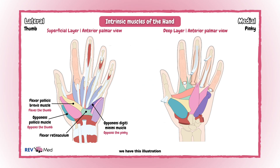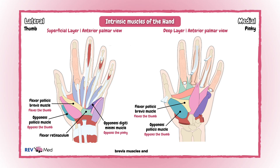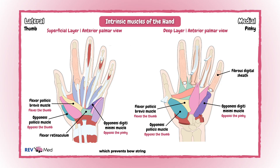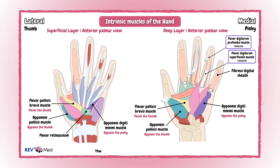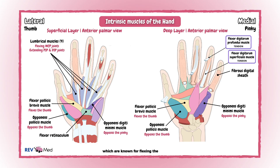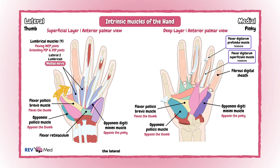Let's go a little deeper. This illustration still shows our thumb area for the opponens pollicis and flexor pollicis brevis muscles, and the hypothenar area with the opponens digiti minimi muscle. We also show the fibrous digital sheath, which prevents bowstringing of the tendons and encloses the flexor tendons. The deeper intrinsic muscles of the hand are critical for fine motor control. First, the lumbricals, known for flexing the MCP joints and extending the PIP and DIP joints of the fingers. The lateral two lumbricals are innervated by the median nerve, and the medial two lumbricals by the ulnar nerve.